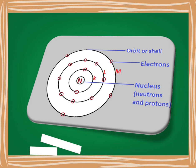The binding energy of the electrons decreases as the electrons move away from the nucleus. In the figure, the shell closest to the nucleus is known as the K-shell. Next to K-shell is the L-shell, and next to L-shell is the M-shell. The binding energy is maximum in the K-shell, decreases in the L-shell, and further decreases in the M-shell.